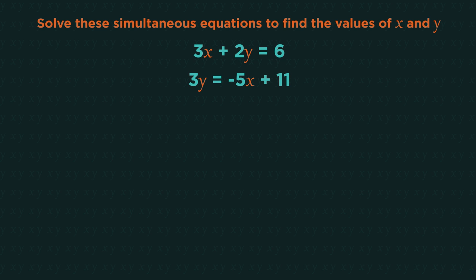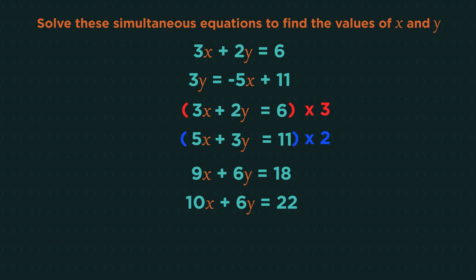Let's have a look at another example. So we start by lining the two equations up, which means we'll need to rearrange the bottom equation to become 5x plus 3y equals 11. Now to eliminate either our x's or our y's, we need to have an equal number of either x's or y's, which we don't have. So we're going to have to multiply the whole equations to match up one of these letters. I'm going to multiply everything in the top equation by 3 to get 6y, and everything in the bottom equation by 2 to also get 6y.